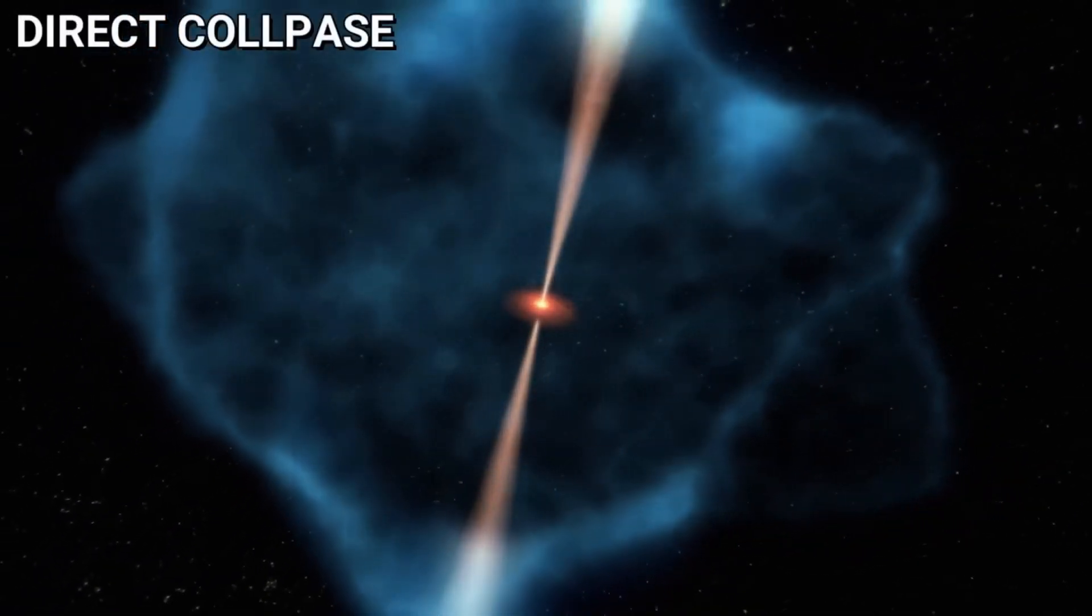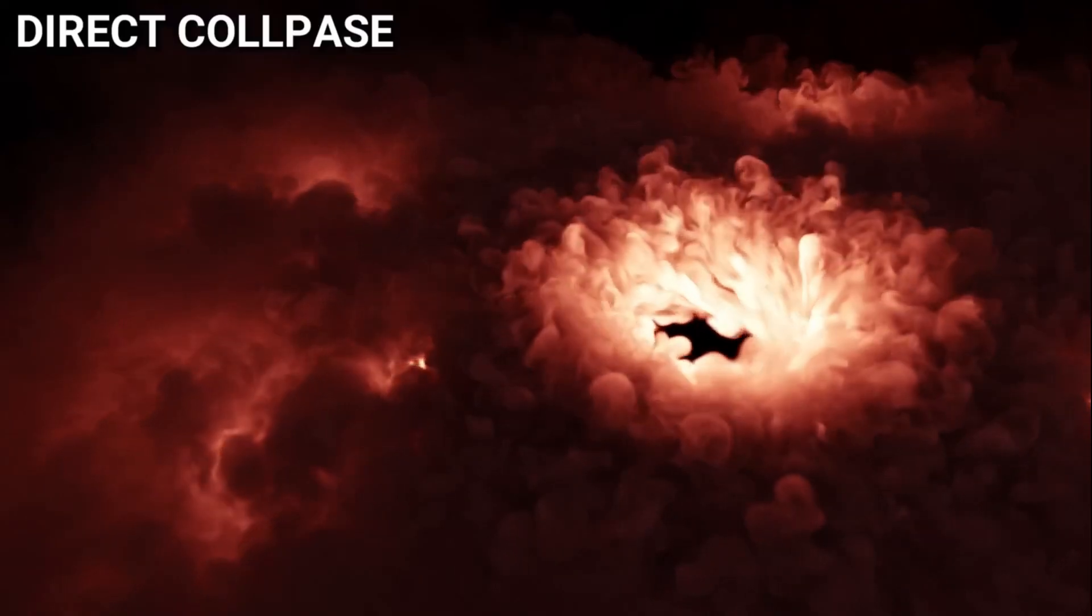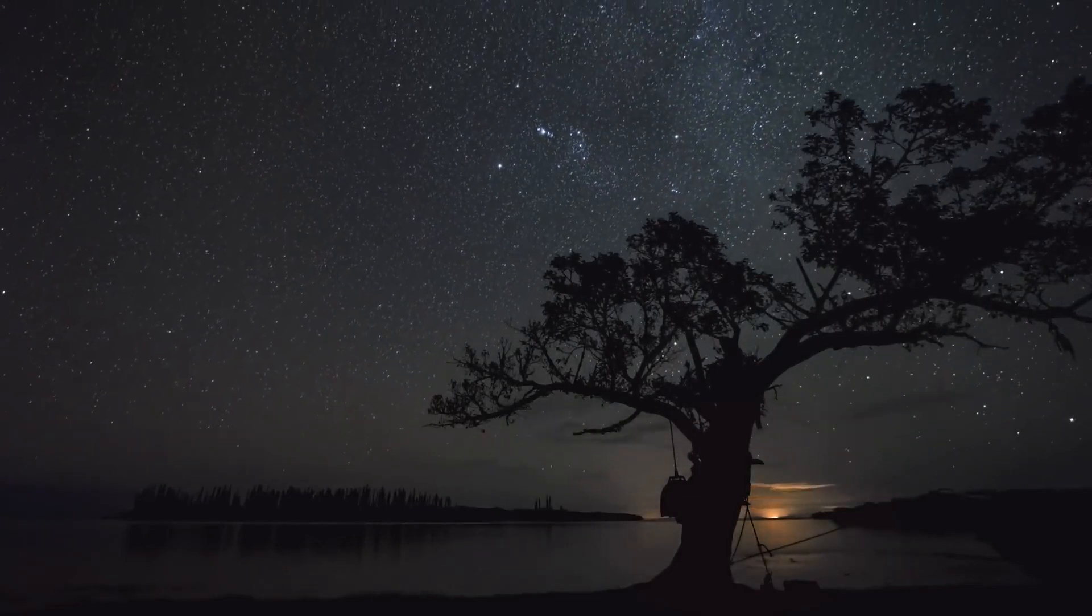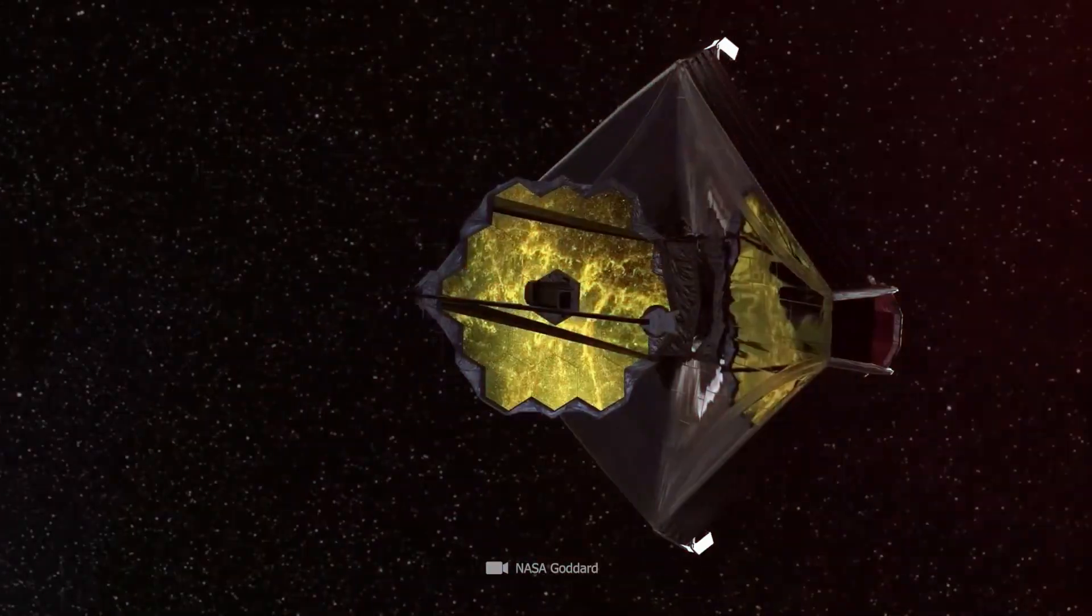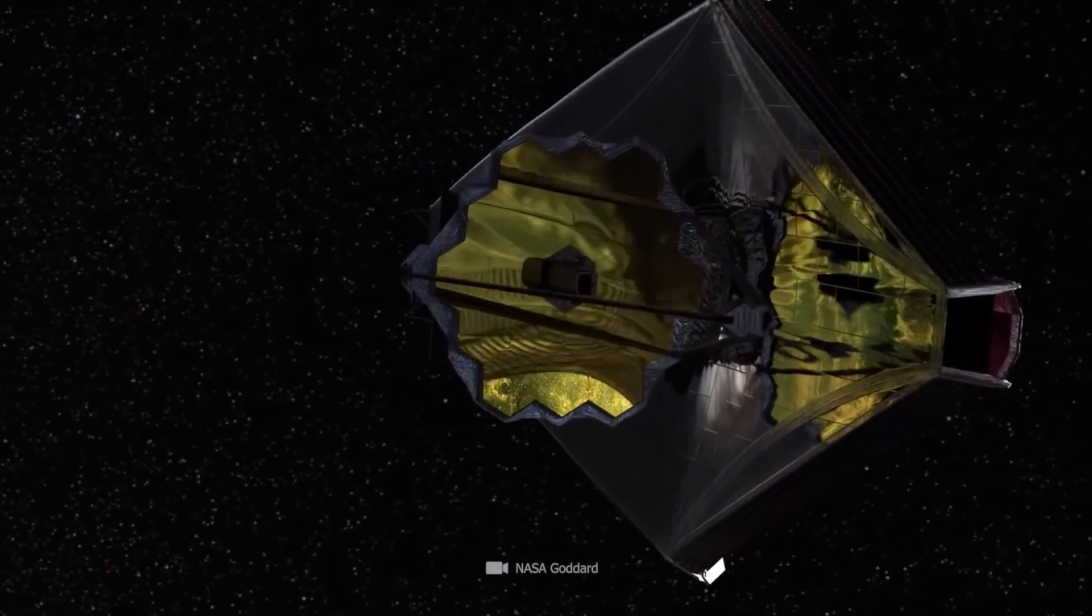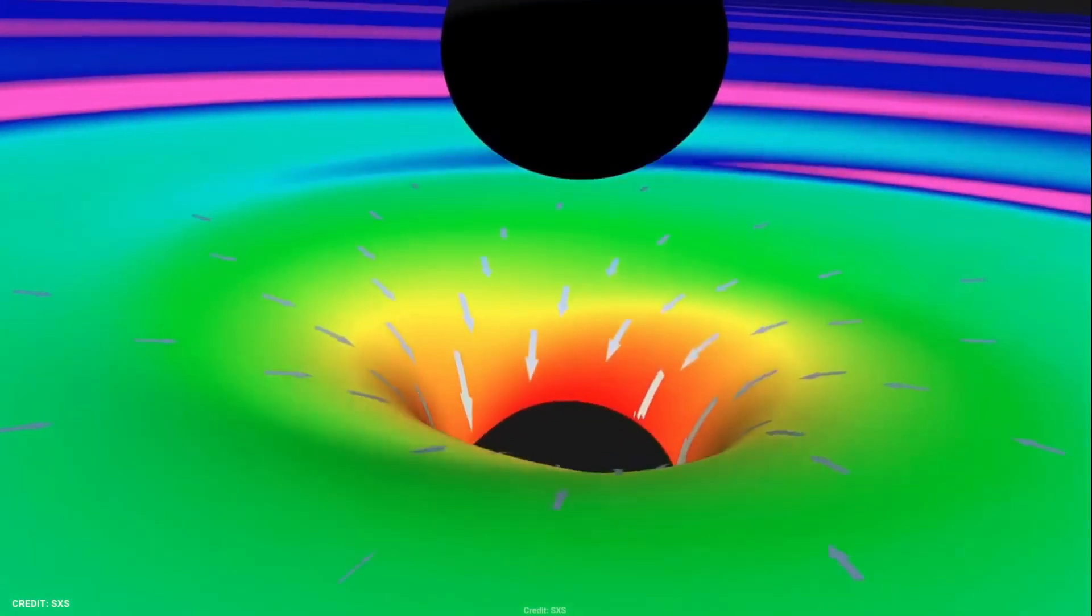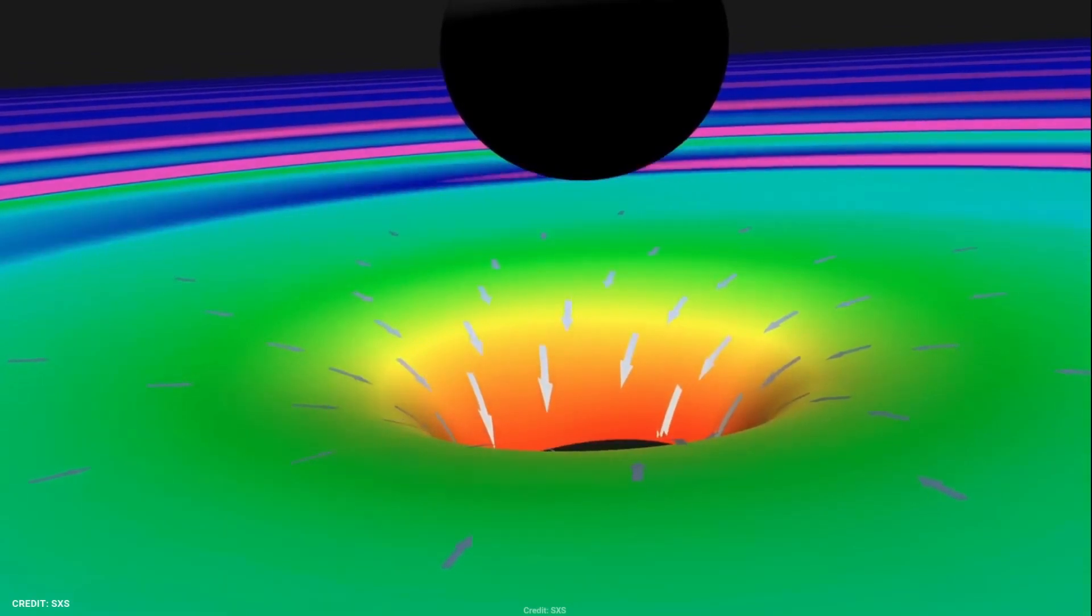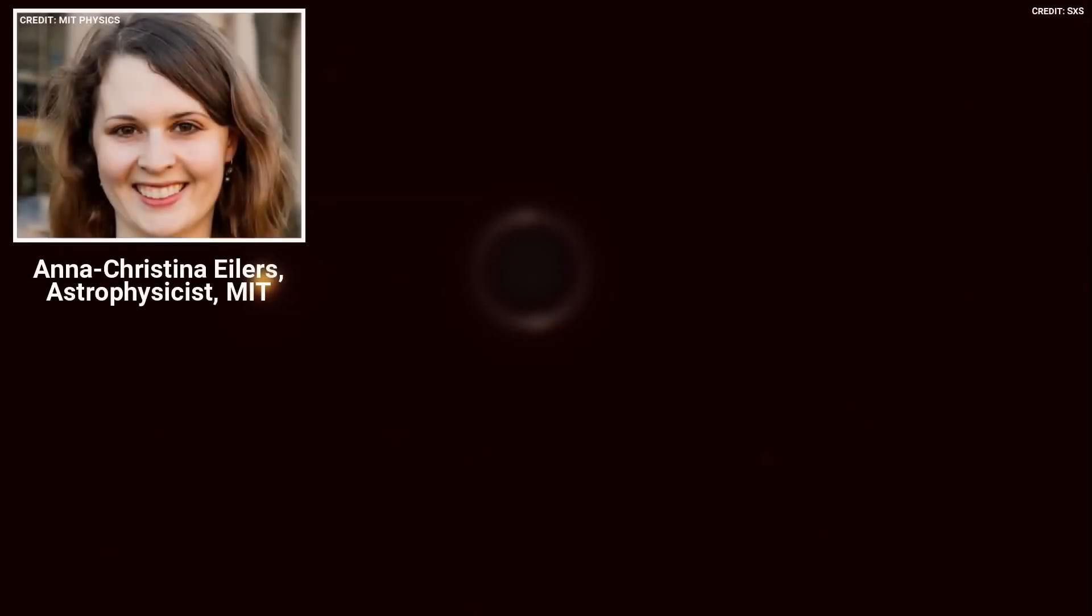Dark stars were first proposed as purely theoretical about 15 years ago. These stars are thought to have existed in the earliest phases of the universe, around 300 million years after the Big Bang. Instead of producing energy through the fusion of hydrogen into helium, dark stars are powered by the decomposition of dark matter.